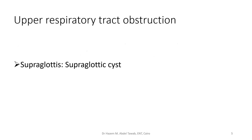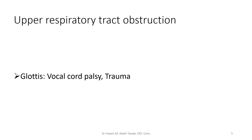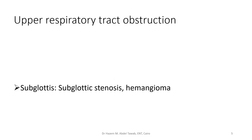At the supraglottis, supraglottic cysts — most often congenital — usually require tracheostomy due to difficult intubation. At the glottis, the most common anomaly is vocal cord palsy, sometimes from physical or chemical trauma. At the subglottis, the most common problems are subglottic stenosis and hemangioma. Hemangioma is a definite indication for tracheostomy because there is risk of causing bleeding in the airway with endotracheal intubation. Therefore, tracheostomy is indicated for subglottic stenosis and hemangioma in the pediatric population.